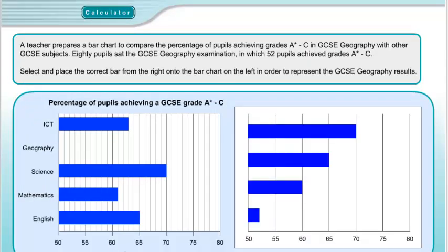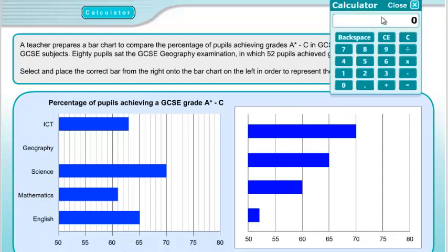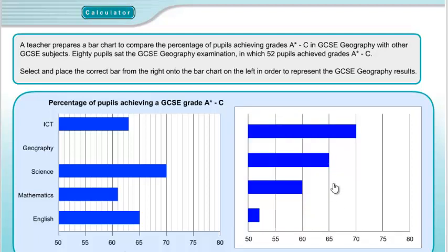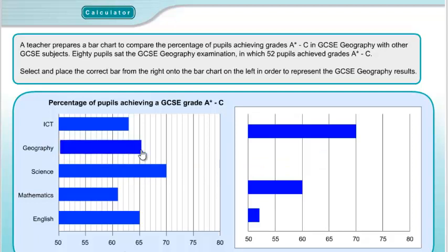Question 13. A bar chart compares geography GCSE results with other subjects. 80 pupils sat the geography exam and 52 achieved grades A* to C. So it's 52 divided by 80 equals 0.65, which as a percentage is 65%. We find the bar showing 65% and drag it into place.